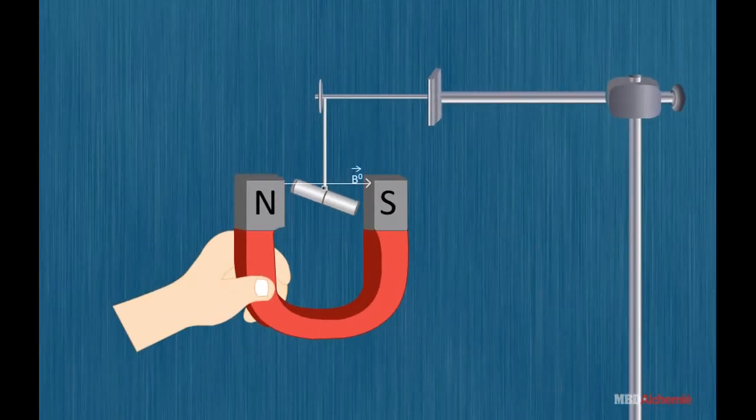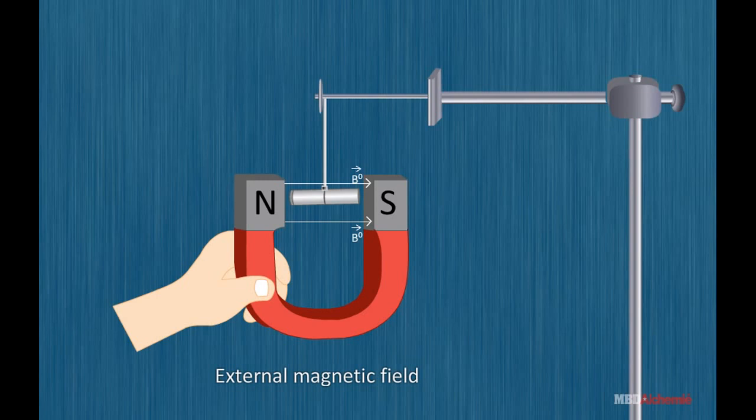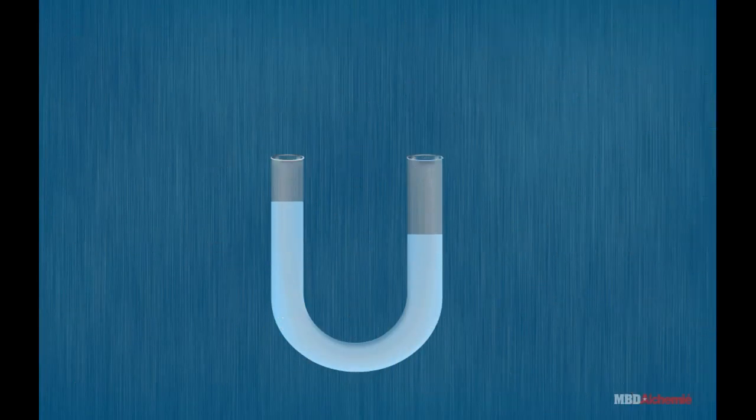When a paramagnetic material is suspended in a uniform magnetic field, the paramagnetic substances rotate to bring their longest axis along the direction of the field.